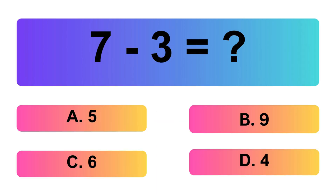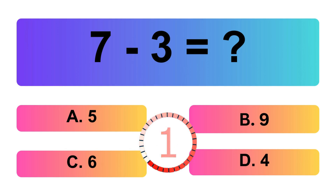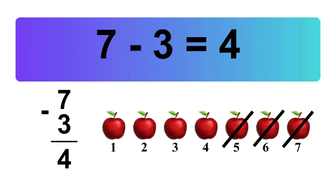7 minus 3 is equal what? Let's count it: 1, 2, 3, 4. So, the answer is 7 minus 3 is 4.